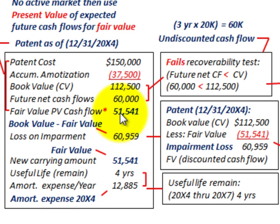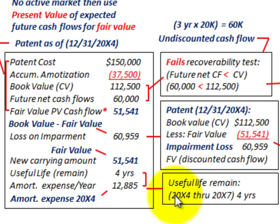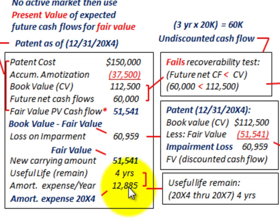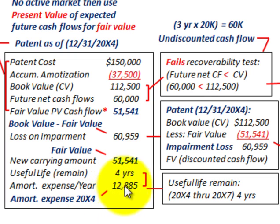We have a new carrying amount equal to the fair value on this patent: $51,541. The useful life remaining is four years — 20X4 through 20X7 — because we're recognizing this impairment at the beginning of 20X4 with four years remaining. Dividing the new carrying amount of $51,541 by four years gives us amortization expense of $12,885 per year. That will be our new amortization expense on this patent for the next four years, 20X5 through 20X7.